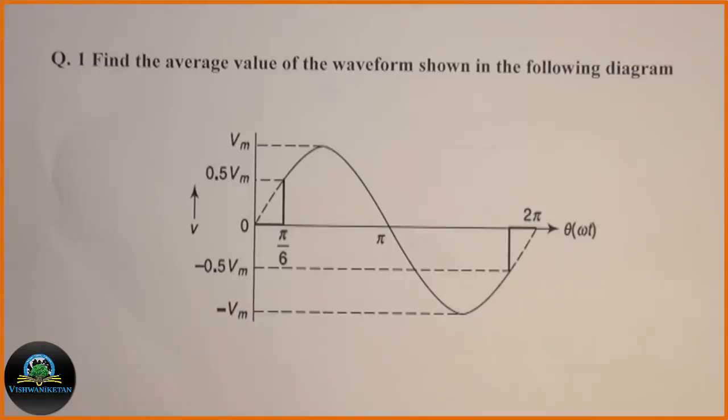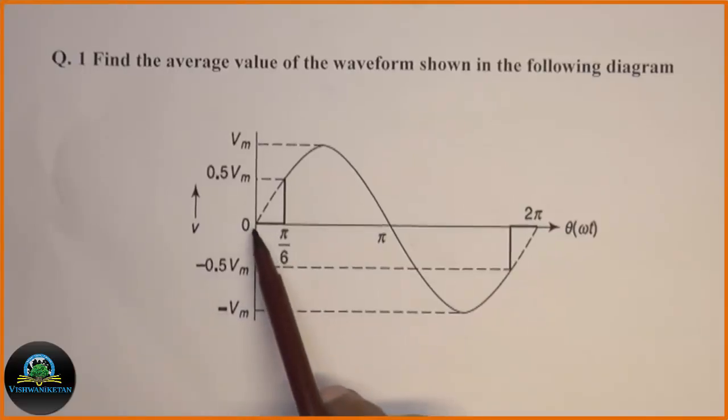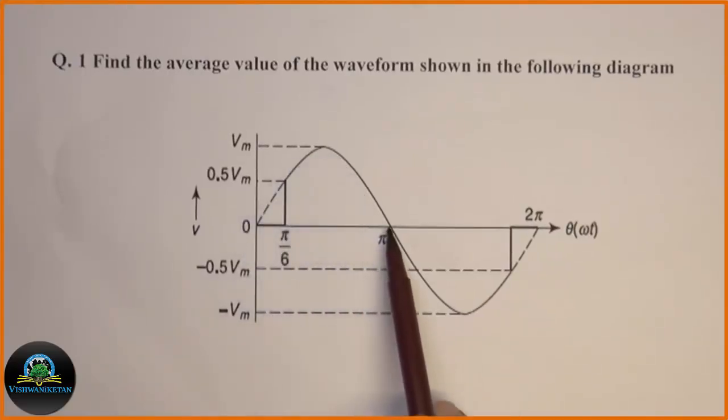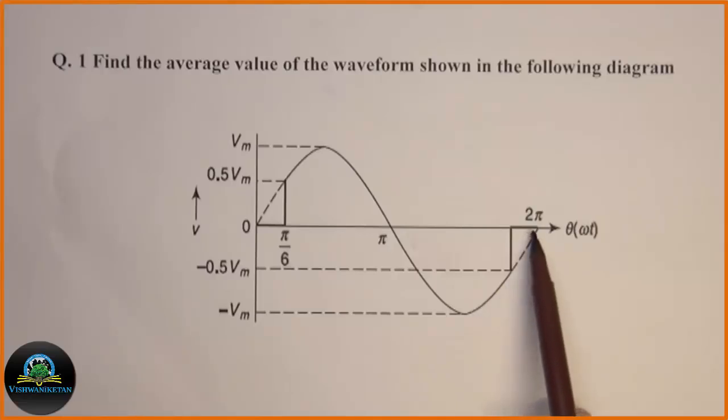By observing the waveform we can see that the waveform is symmetrical. Symmetrical means the positive and negative half of the waveform are the same. So here positive waveform and negative waveform both are symmetrical to each other. Let us start with the solution.